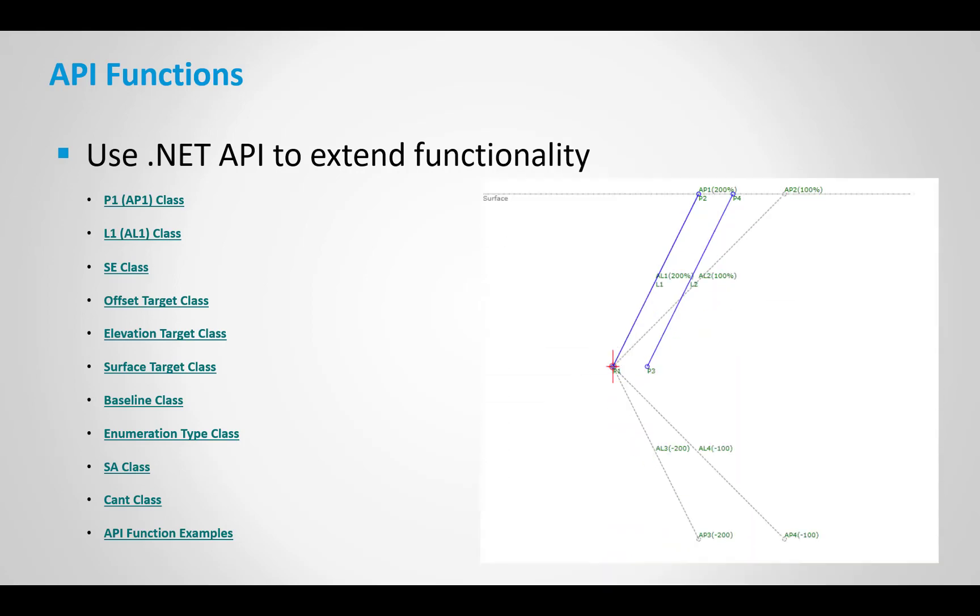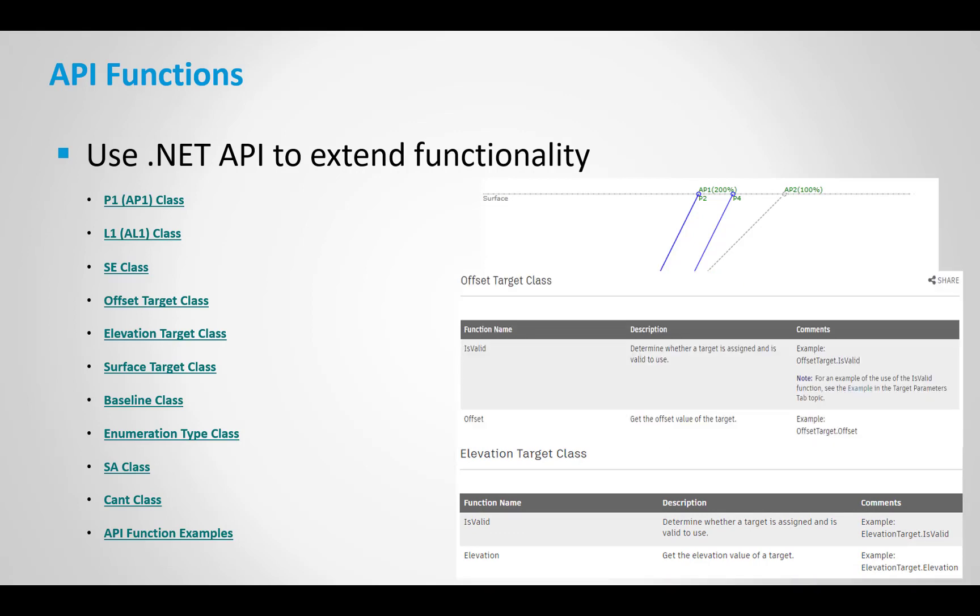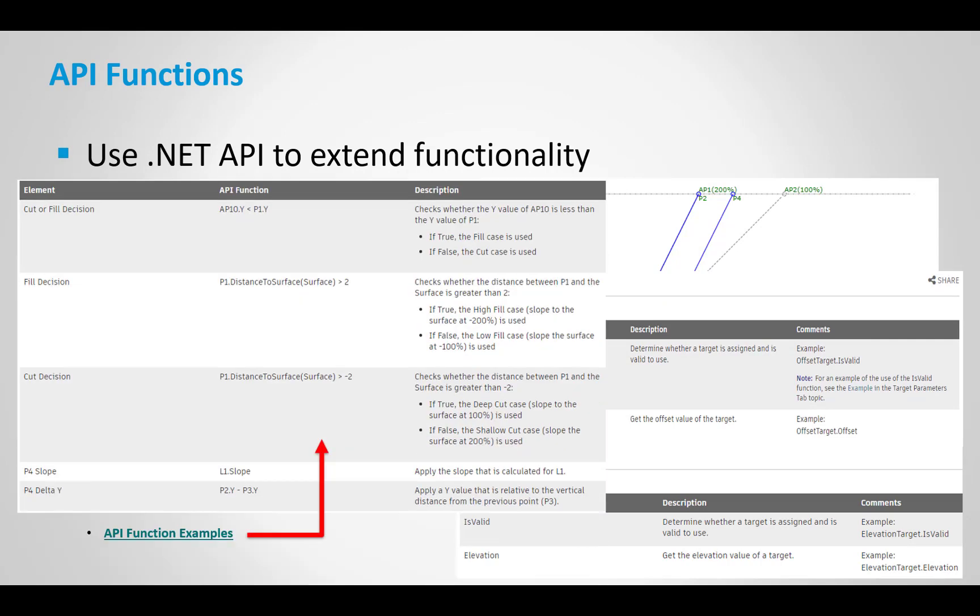The most common ones that you will use are surface auxiliary points, auxiliary links, other API functions such as elevation. So elevation targeting, width targeting, so offset or width targeting. And then one of the more utilized ones, one of the most common ones is decision making. You can use your API function examples for say a cut and fill decision or any of those decision makings to utilize certain aspects of your subassembly.